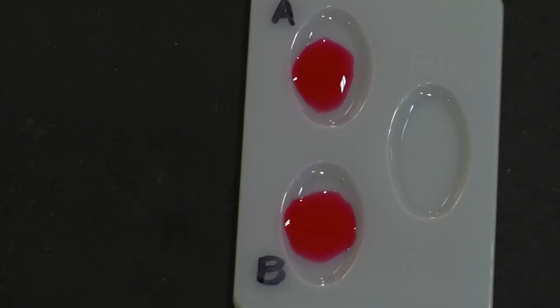Notice in both of these wells, nothing has happened. The blood sample does not contain A or B antigens. That tells us that this sample is from someone whose blood is in the O blood group.